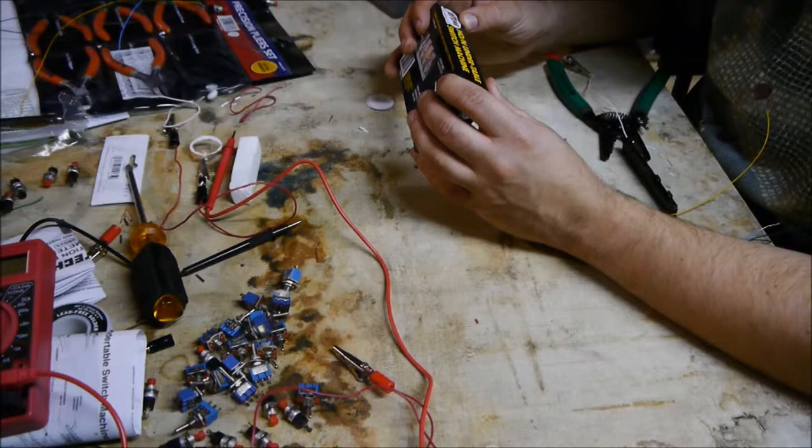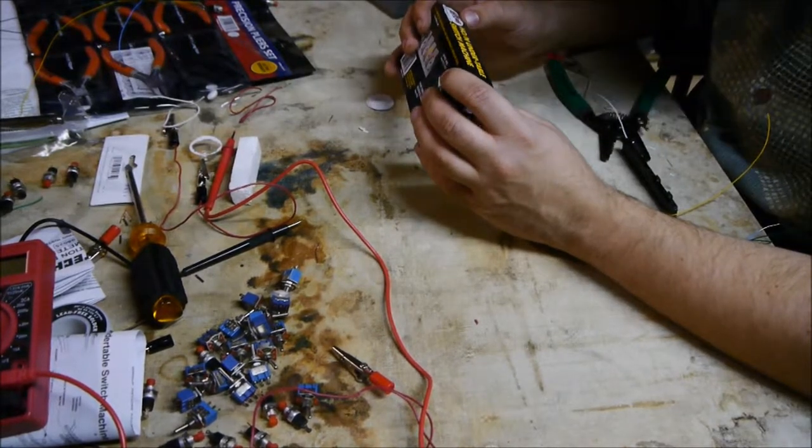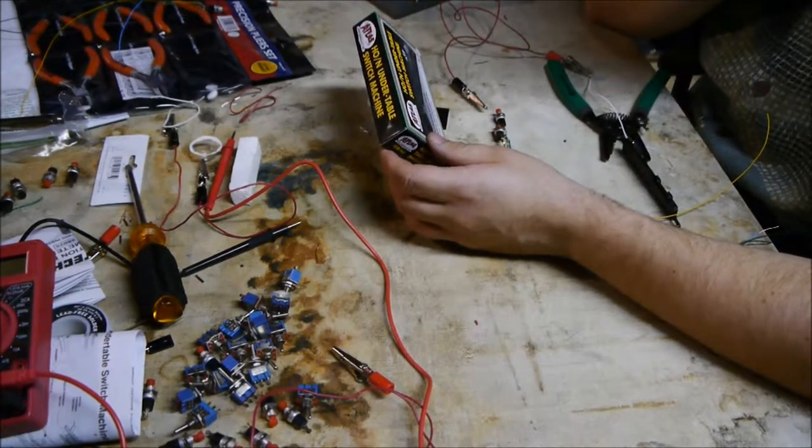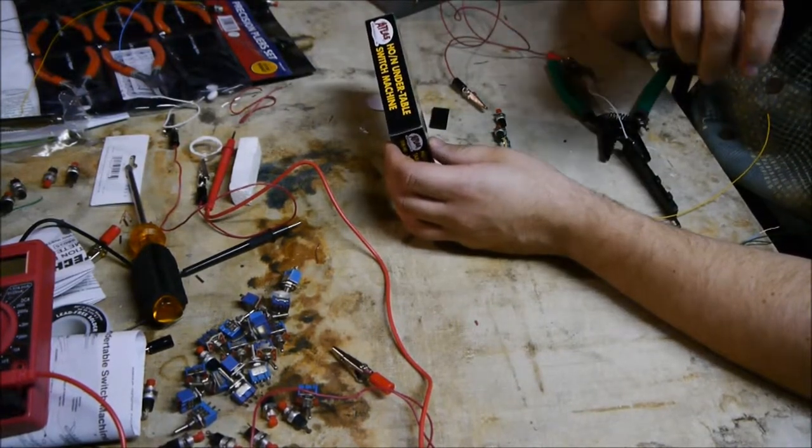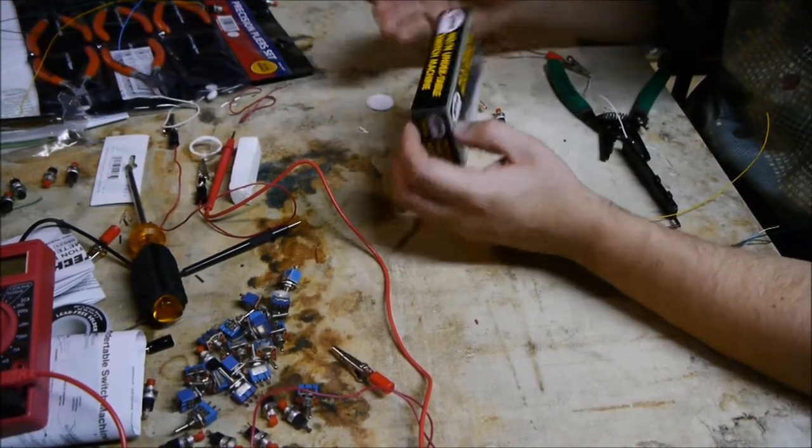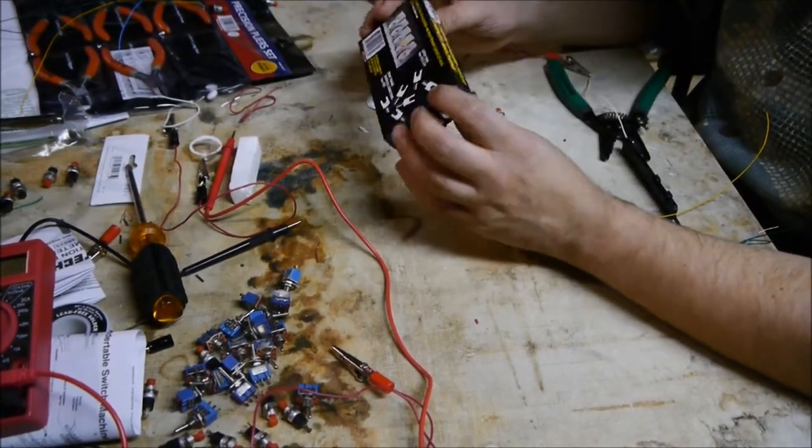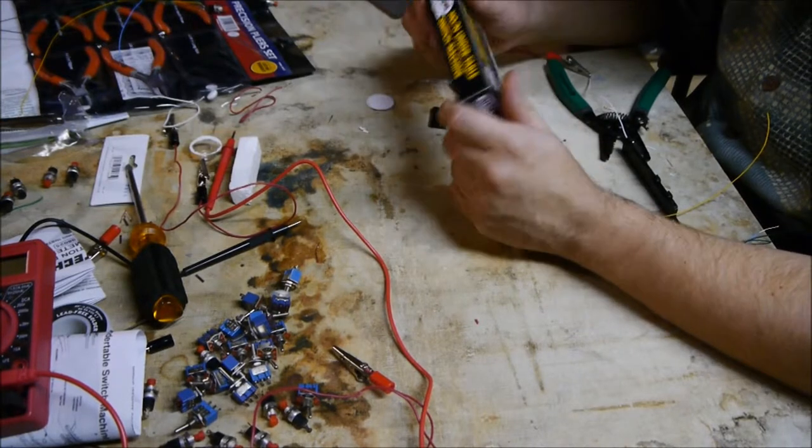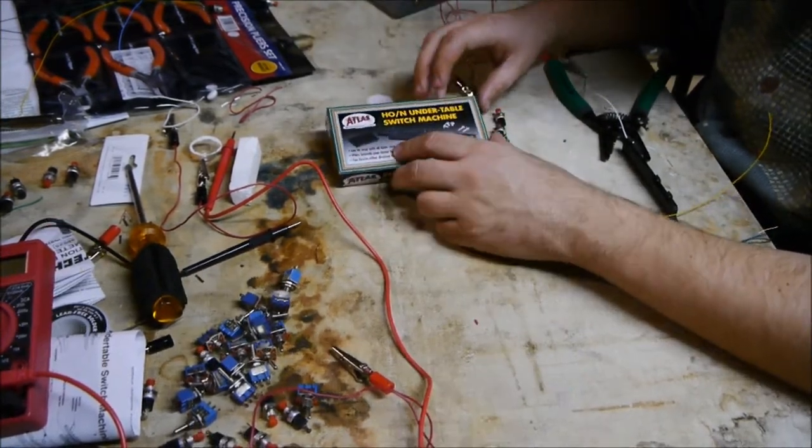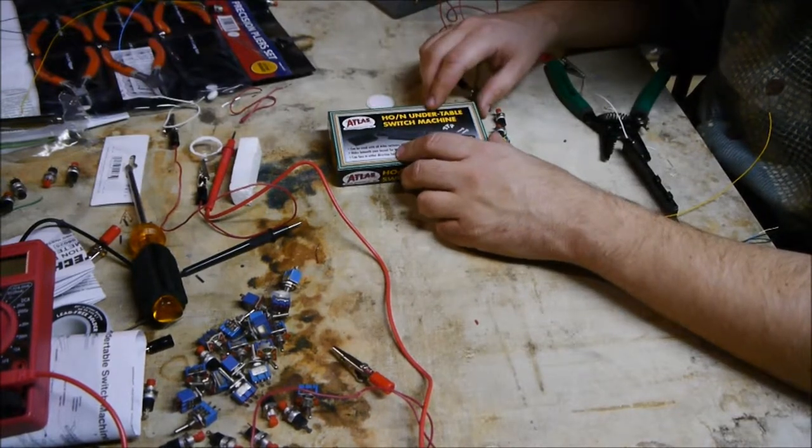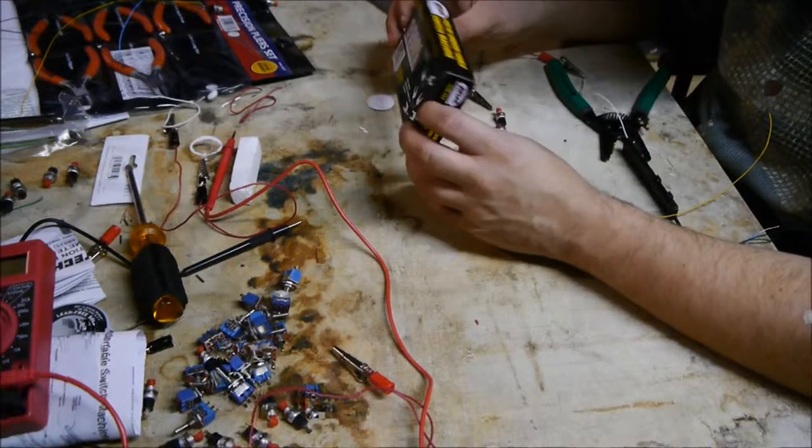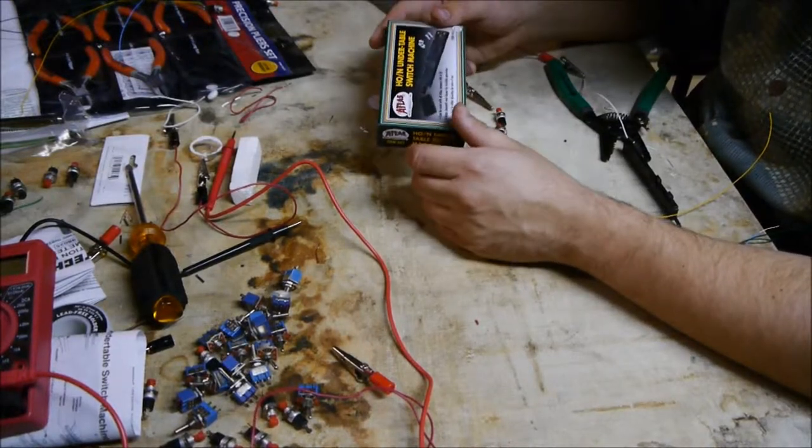But Atlas right now is having a shortage of track, and I couldn't find turnouts anywhere. And I actually had to buy turnouts from four or five different places. I needed nine turnouts for the layout. And I had to buy them from four different places. Just hard to find. And the last place, they only had switch machines with a remote.